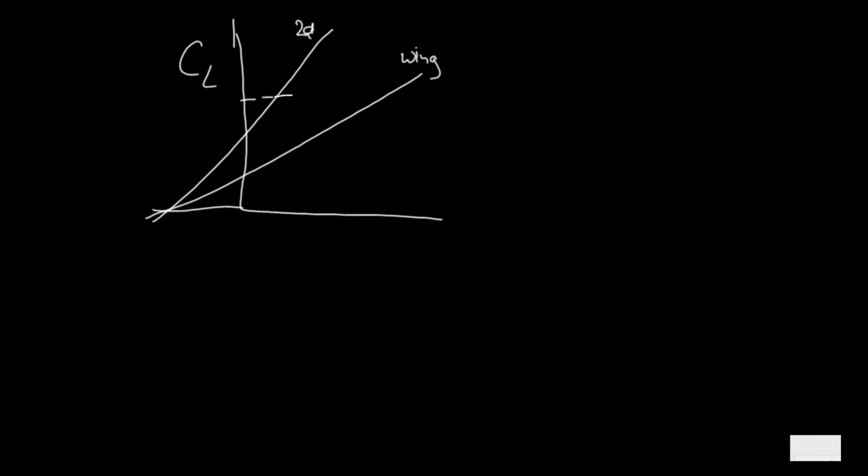They have both the same CL. This is alpha effective and this is alpha, and the difference is alpha_i, the induced angle.